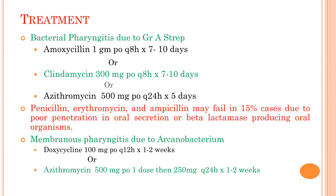Treatment: since bacterial causes account for only 10–15% and the main bacterium is Streptococcus group A, treatment is targeted. Amoxicillin 1g 8-hourly for 7–10 days is adequate. If the patient is sensitive to beta-lactam, clindamycin can be given. Penicillin 300mg 8-hourly for 7–10 days, or azithromycin 500mg once daily for 5 days. Note that penicillin, erythromycin, and ampicillin may fail in 15% of cases due to poor penetration into oral secretions or beta-lactamase-producing oral organisms.